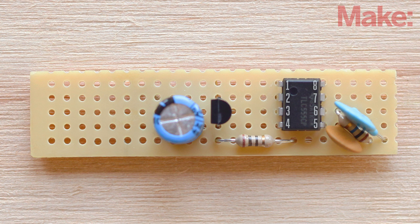Solder the negative lead from the battery case to the ground rail and run its positive lead to the corner of the perfboard. Strip enough insulation to run the wire from the corner to pin 8 on the 555. This will be the power rail for the circuit.